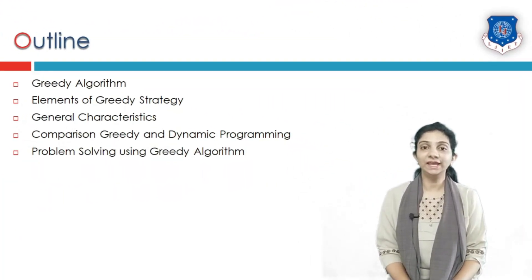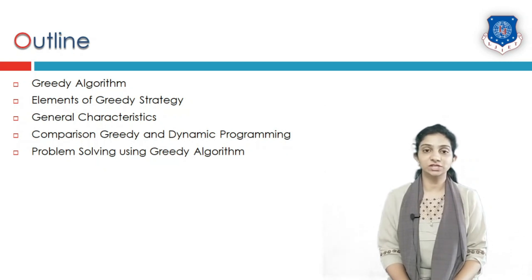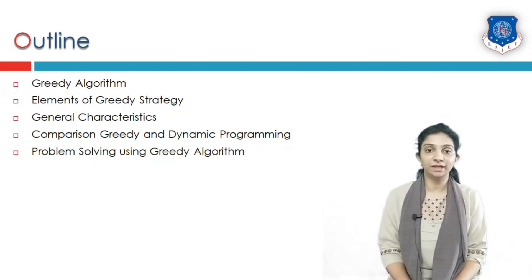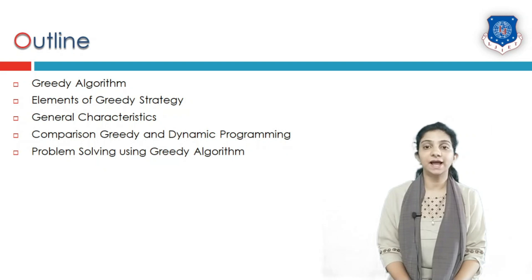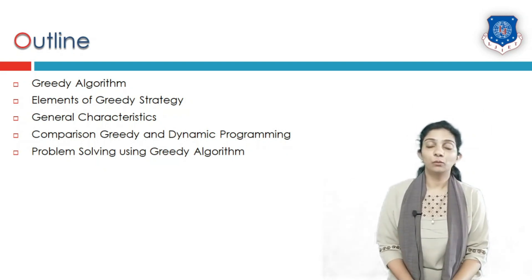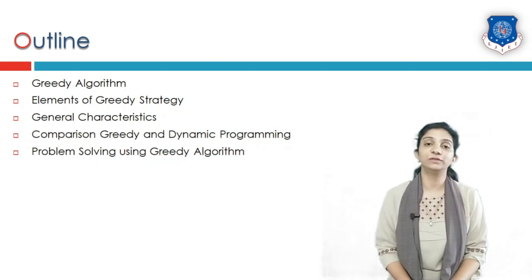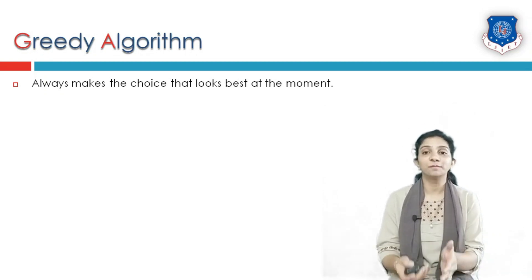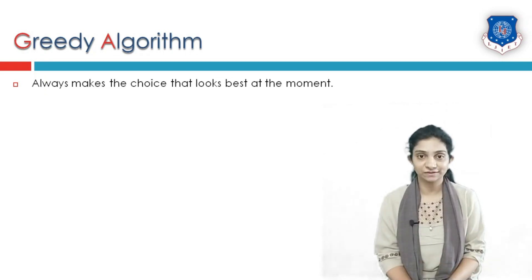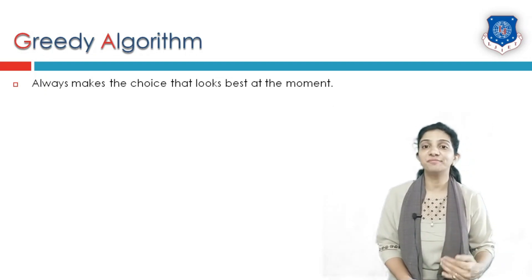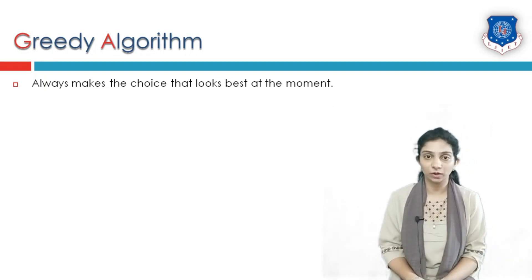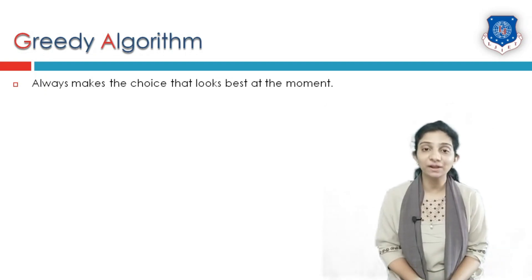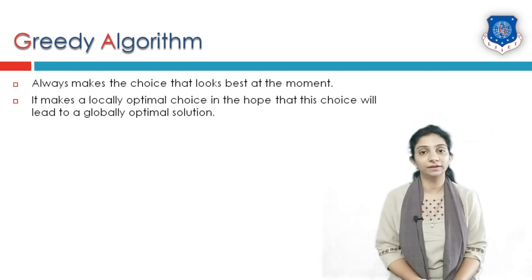Today we are going to study greedy algorithm or greedy method. We will see what are the elements of greedy strategy, followed by characteristics of greedy method. We will also compare the difference between greedy method and dynamic programming, and see what problems are solved using greedy algorithm. Greedy algorithm always makes a choice that looks best at the moment — choices which are looking best at that moment are selected, which is why it is called greedy algorithm.